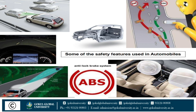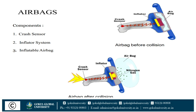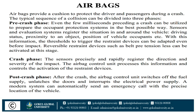The first safety system is the airbag. Its components are: first, crash sensor; second, inflector system; third, inflatable airbags. Airbags protect the driver and passenger during a crash. The typical sequence of a collision can be divided into three phases.